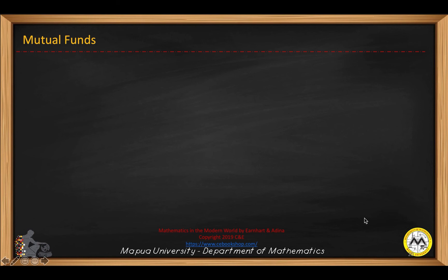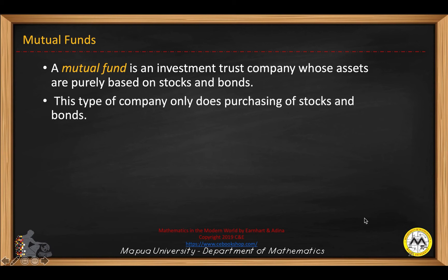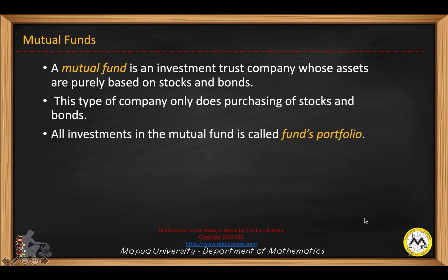This is the last part of financial mathematics, so I'll be discussing mutual funds. A mutual fund is an investment trust company whose assets are purely based on stocks and bonds. This type of company only does purchasing of stocks and bonds. All investments in the mutual fund are called the fund's portfolio.